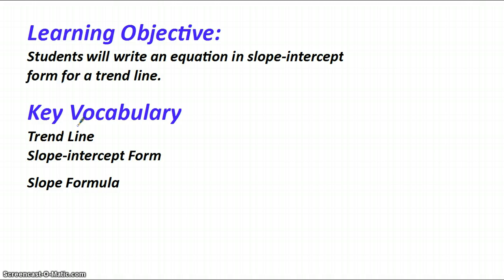So your objective for this lesson will be to write an equation in slope-intercept form for a trend line. You have one new vocabulary term, which is trend line itself, but I want to make sure that we review slope-intercept form and the slope formula because we're going to use that in order to create the trend line.